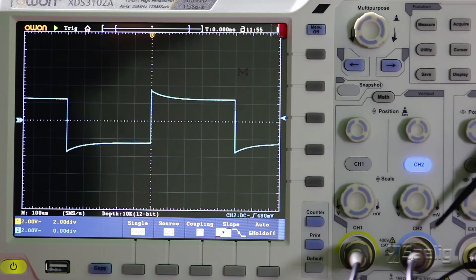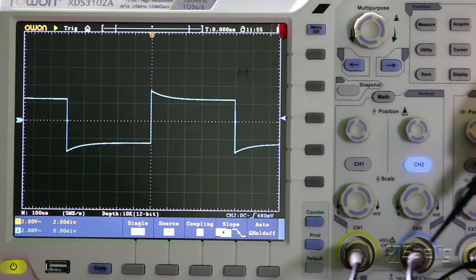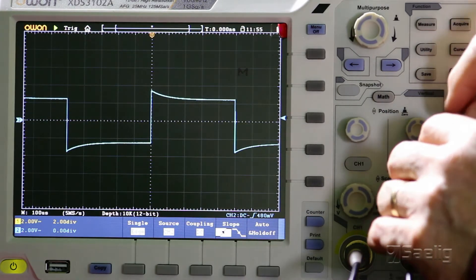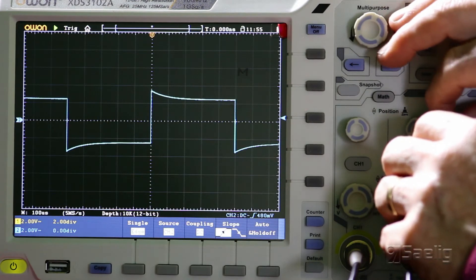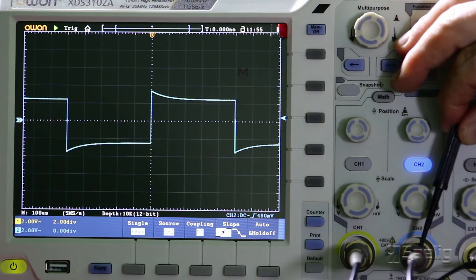Probes have an adjustment on them in their x10 position. It's either in the BNC shroud right here, right at the entrance to the scope or it's on the probe somewhere out at the probe tip. In this particular case, our adjustment is right here. You're usually provided with a tool to do this with your probe kits. So look for this little plastic screwdriver.